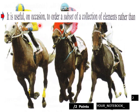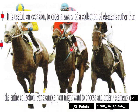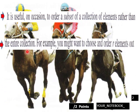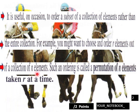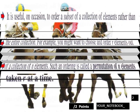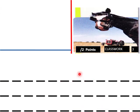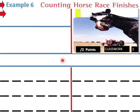It is useful on occasion to order a subset of a collection of elements rather than the entire collection. For example, you might want to choose and order r elements out of a collection of n elements. Such an ordering is called a permutation of n elements taken r at a time. That's a little bit more complicated there.